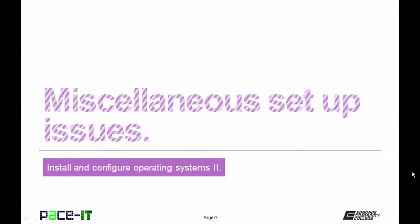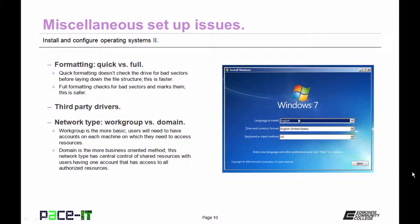Let's talk about miscellaneous setup issues that may arise or that you need to be aware of. The first thing is formatting the hard drive — a quick format versus a full format. In a quick format, the system does not check the hard drive for bad sectors before laying down the file structure; it's faster. The full format does check for bad sectors and marks them so that files are not placed in those bad sectors. It's slower, but it's much safer.